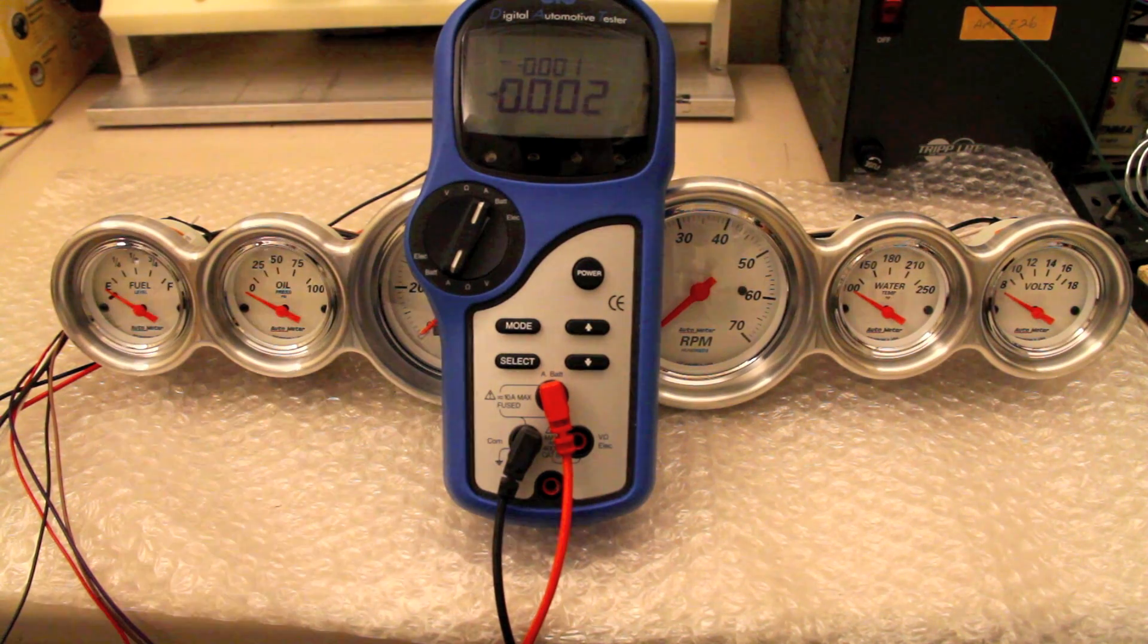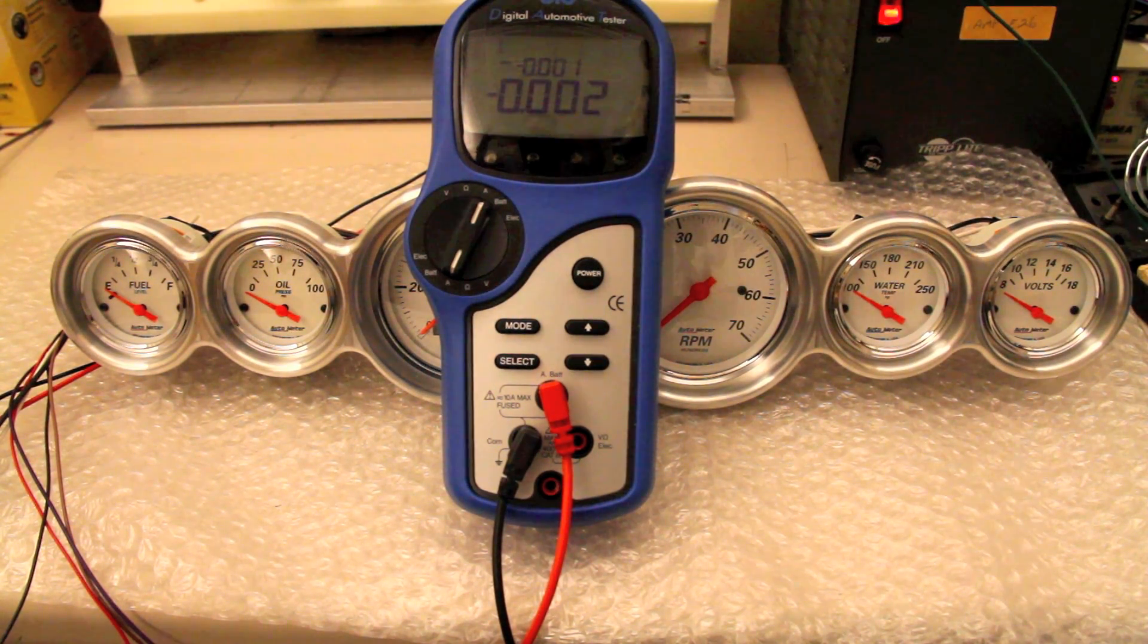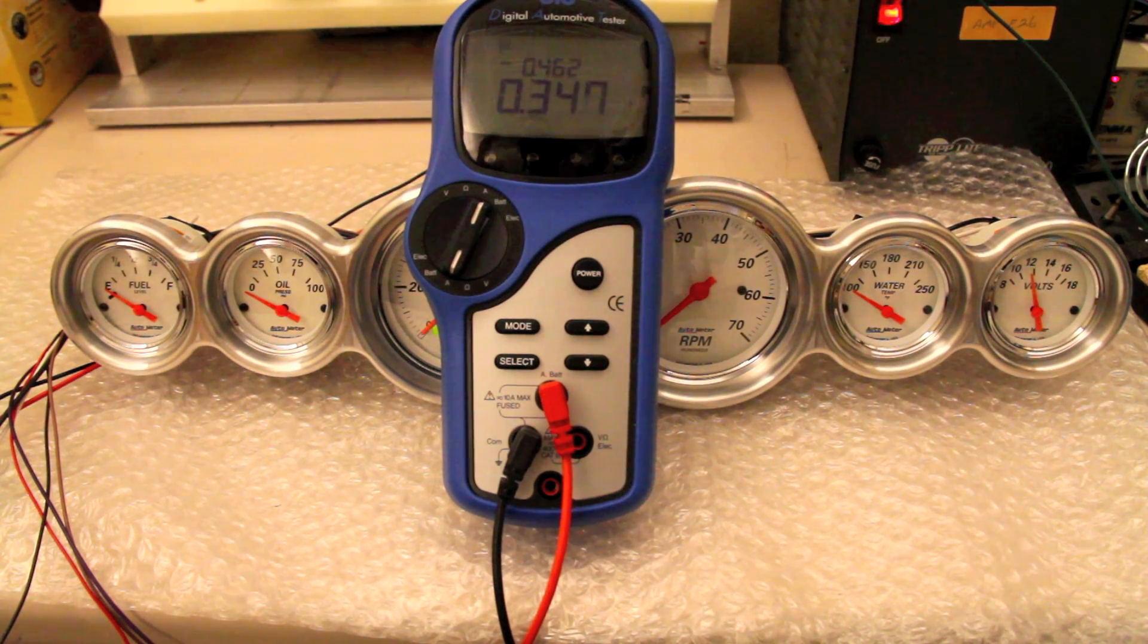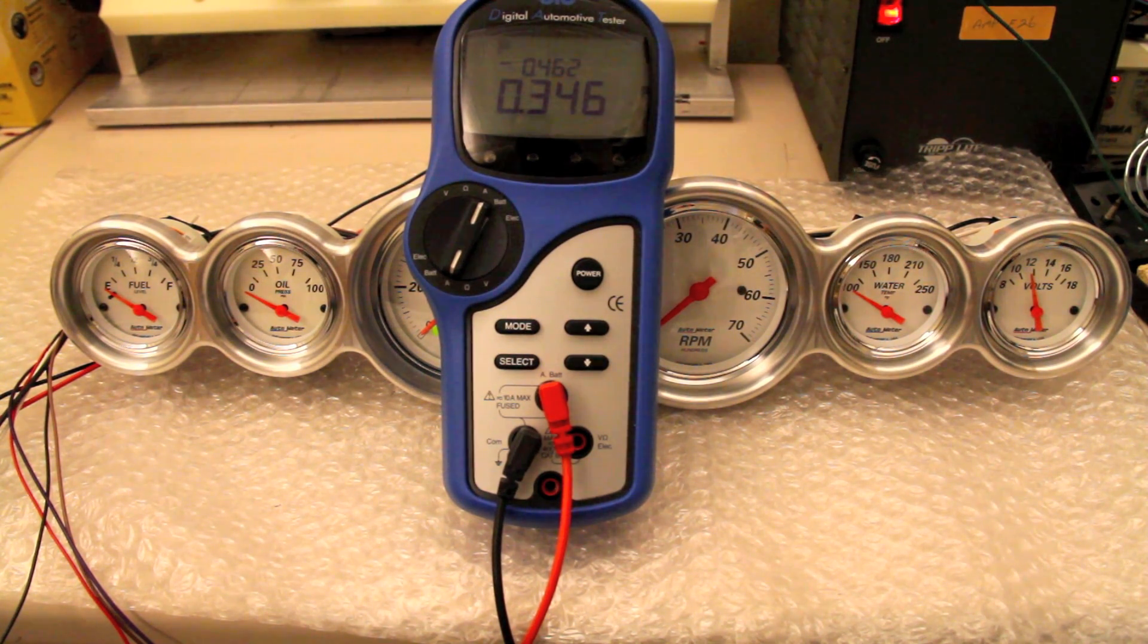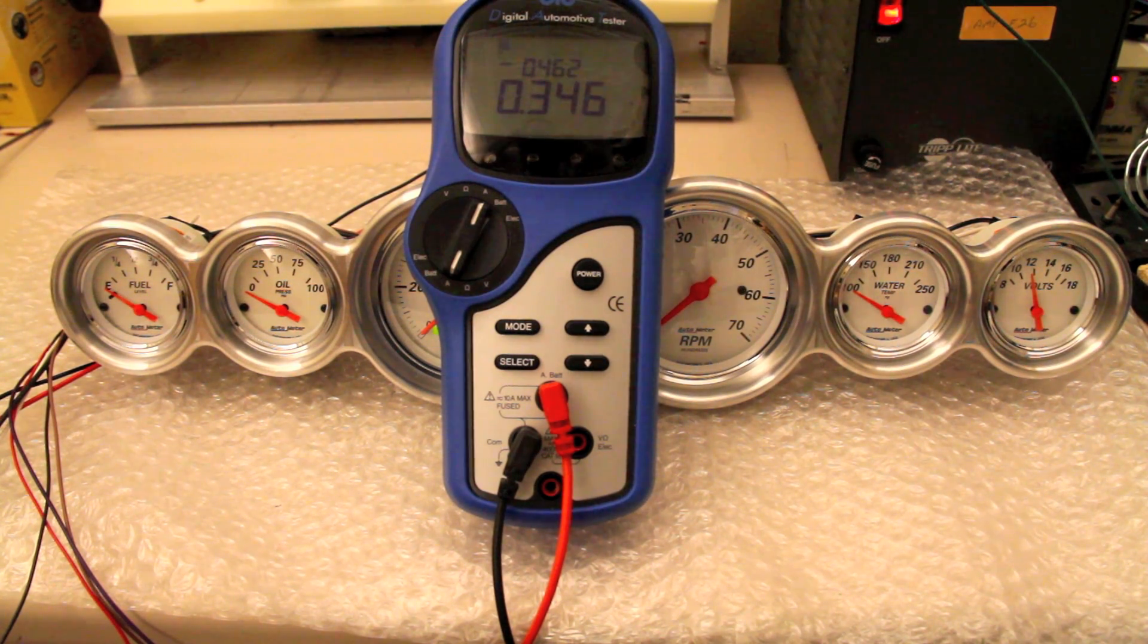So let's go ahead and power up the set and see what we've got here. Now this is static powered, there's no signal going through them, this is just enough to turn the gauges on, and what we can see on the meter here is about, well less than a half an amp really to get all six gauges up and running.